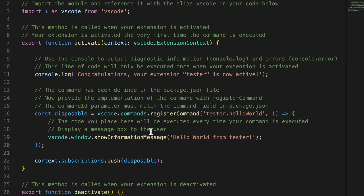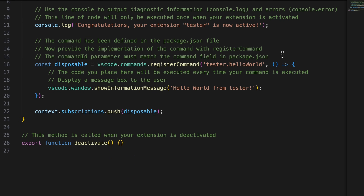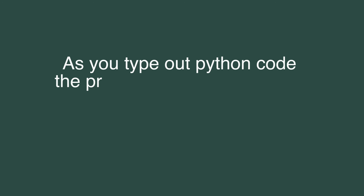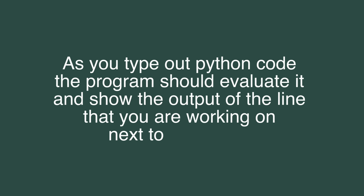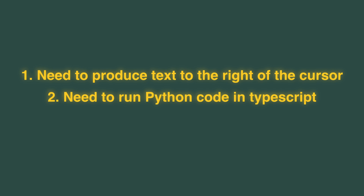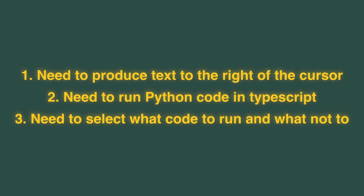So now what? I have this basic extension but it really doesn't do anything I want. Let's break this down. Here's the idea: as you type out Python code, the program should evaluate it and show the output of the line next to the cursor. So the first thing is we need to produce text to the right of the cursor, we need to run Python code inside TypeScript, and we need to know what code to run and what not to run.